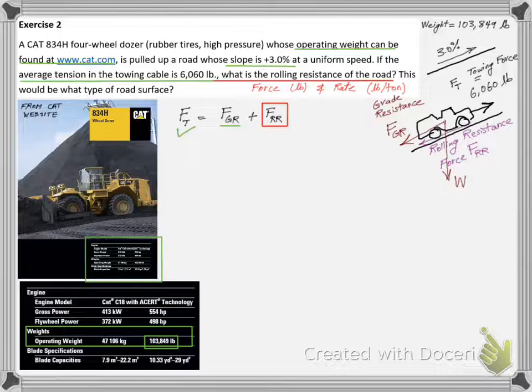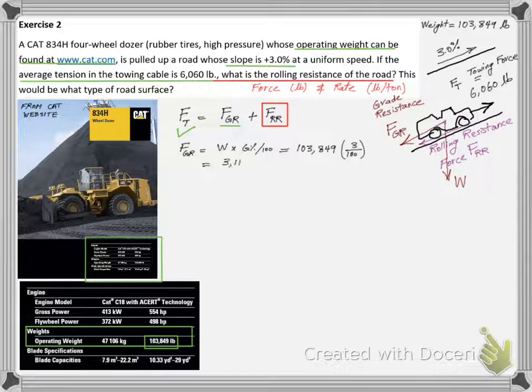We are given the towing force, what about FGR? We can calculate FGR by using its relation with the weight that we derived in the lecture. We insert the given values and find FGR to equal 3,115 pounds.